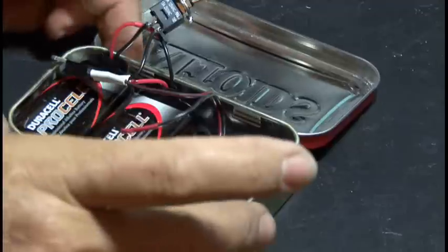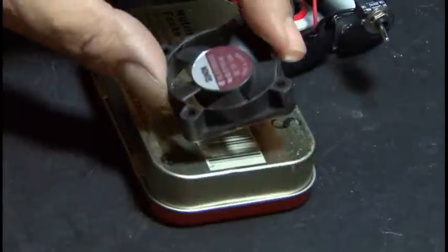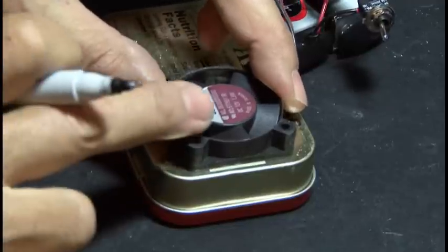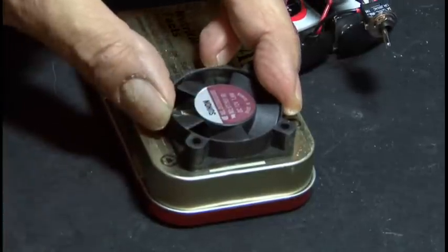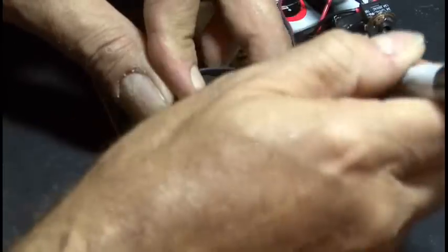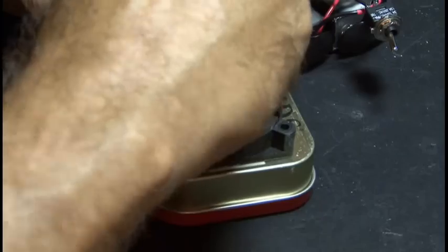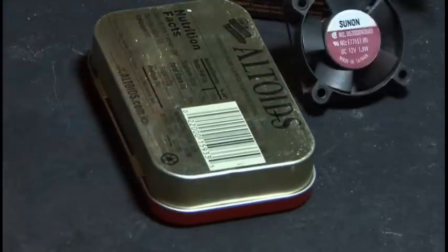And now it's time to cut some holes for our fan. The fan's 40 millimeters square and we want our hole obviously to be smaller than that. So I'm going to just make some small marks with a Sharpie here, and then draw out a square that I'll cut out with a Dremel smaller than my marks.